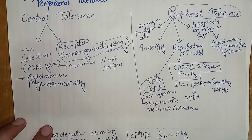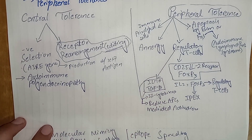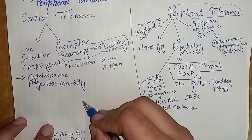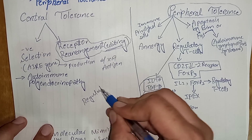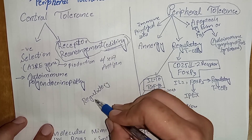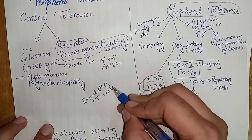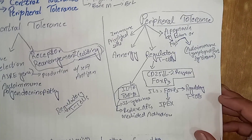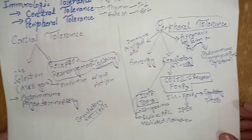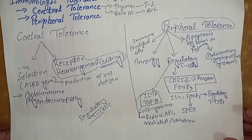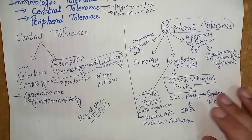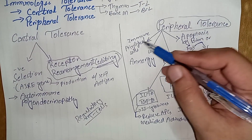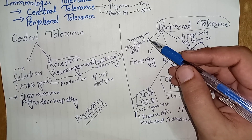Some lymphocytes may escape central tolerance and develop into regulatory T cells. These regulatory T cells then play their role in peripheral tolerance, which is the deletion or inactivation of lymphocytes in peripheral tissues.